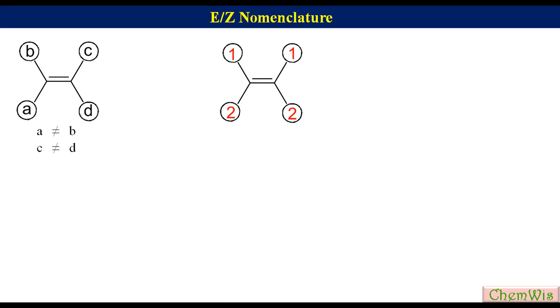If the high priority groups are on the same side of the double bond, the isomer is Z-isomer. If the high priority groups are on the opposite side of the double bond, the isomer is E-isomer.